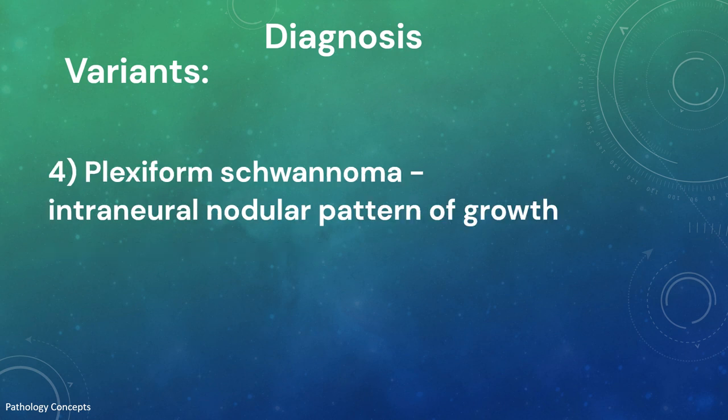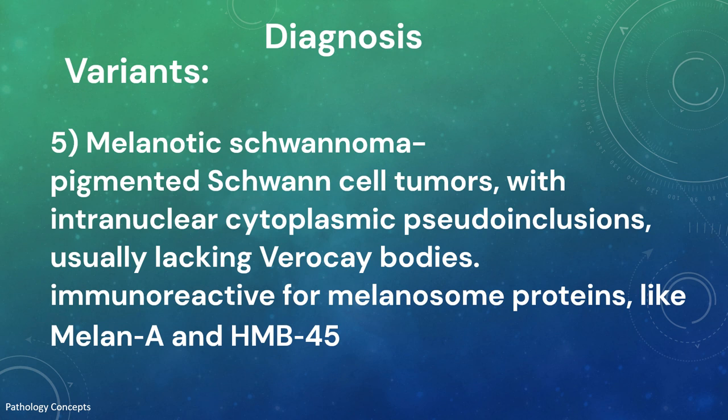Epithelioid schwannoma shows areas of epithelioid morphology, and some subcutaneous examples are predominantly epithelioid type. Plexiform schwannoma has an intraneural nodular pattern of growth. Melanotic schwannoma is a pigmented Schwann cell tumor with spindle cell and epithelioid cell morphology, often with intranuclear cytoplasmic pseudo-inclusions. They usually lack Verocay bodies.